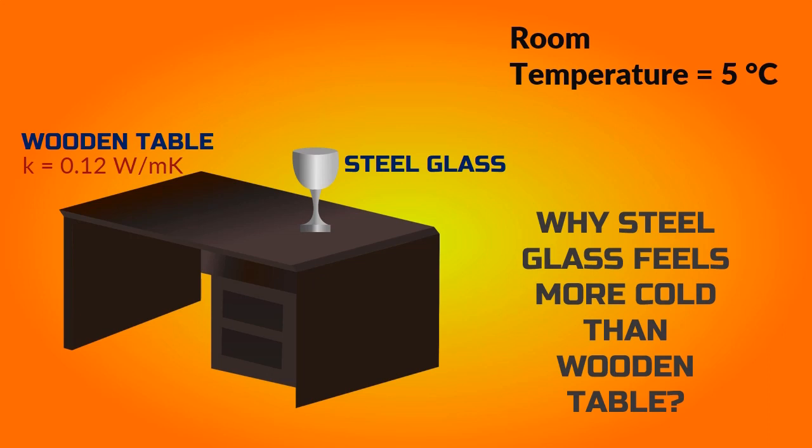It's because steel glass has a very high thermal conductivity value compared to the wooden table. So when you touch the steel glass, the heat from your body flows at a very high rate compared to when you touch the wooden table. So the steel glass feels quite colder than the wooden table.